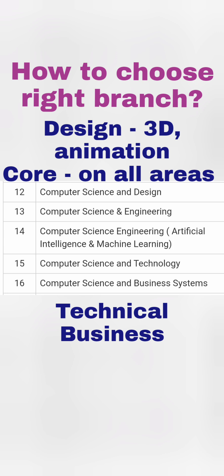CSC AIML is similar to the AIML branch mentioned earlier. Computer Science and Technology is more focused on the coding aspect of computer science, which is why the word 'technology' is used. Computer Science and Business Systems is more focused on the business side, like manufacturing 4.0 and business-related topics. Choose between these based on your interest.